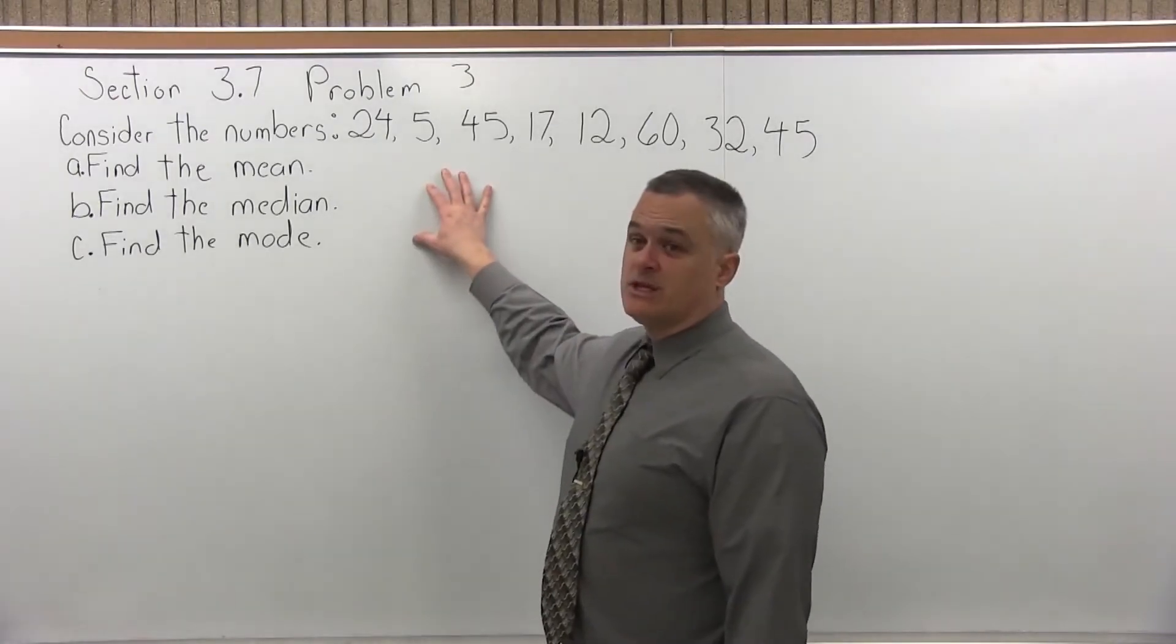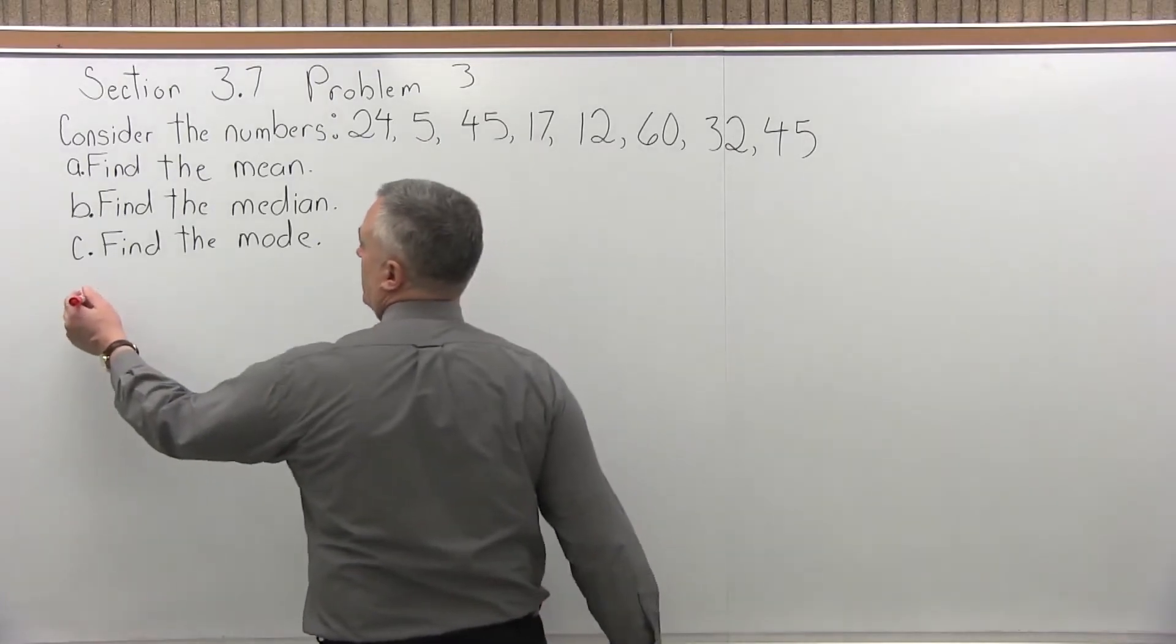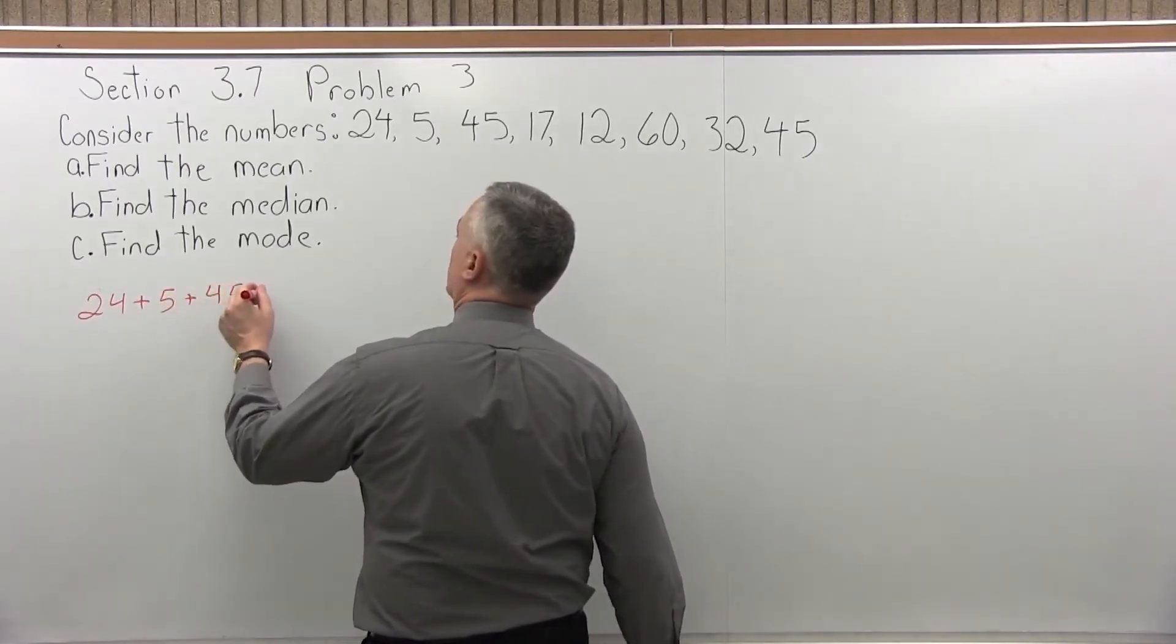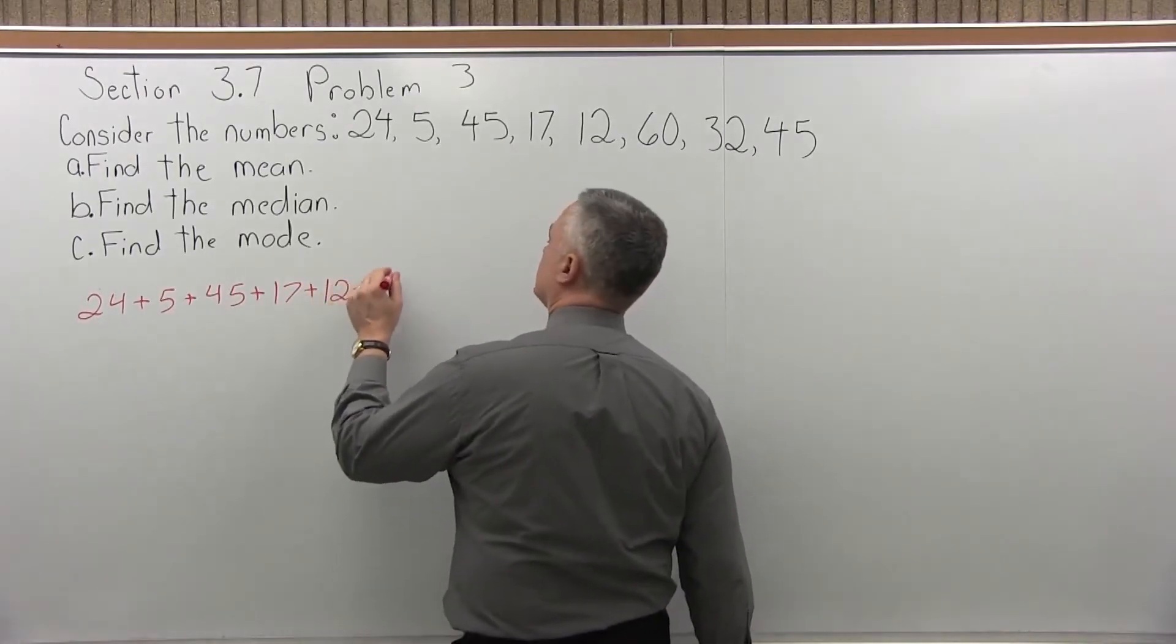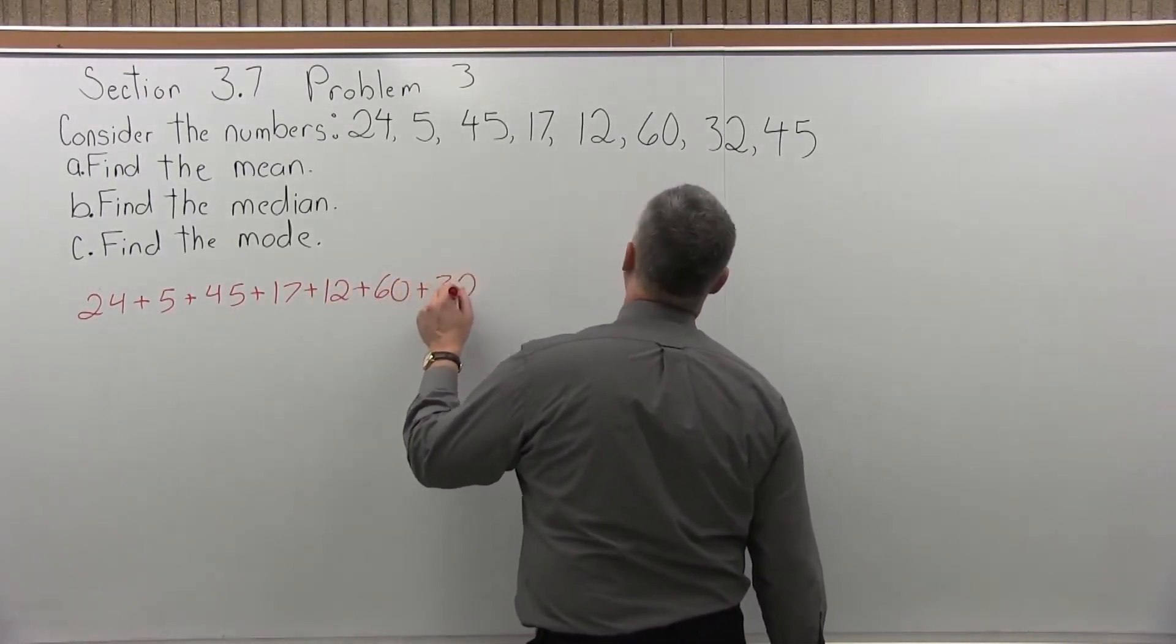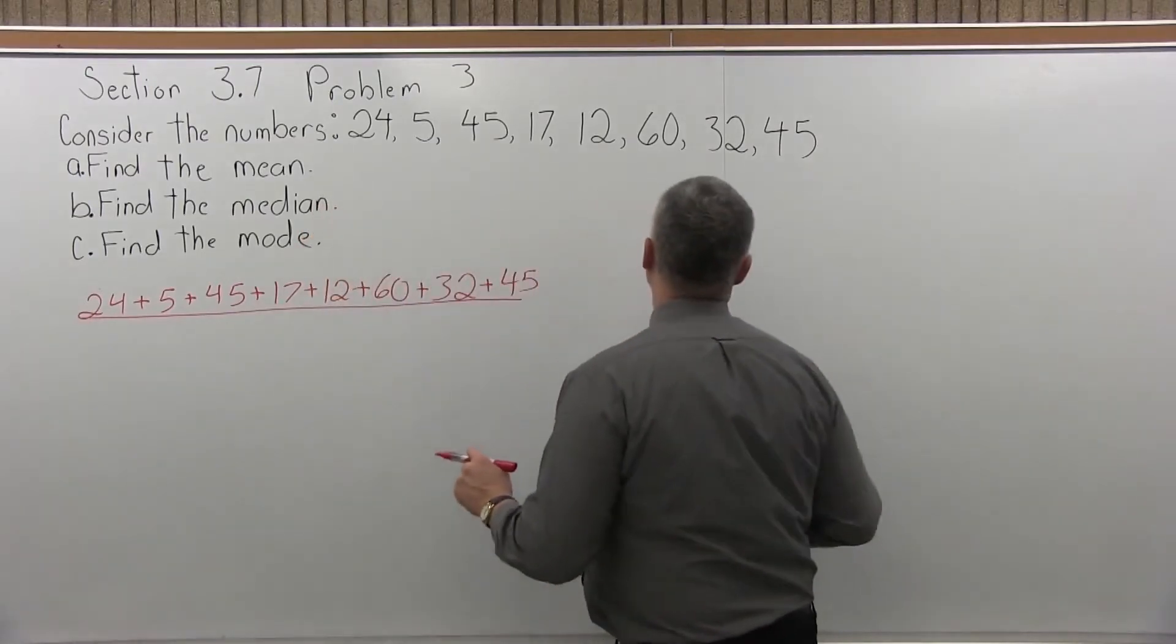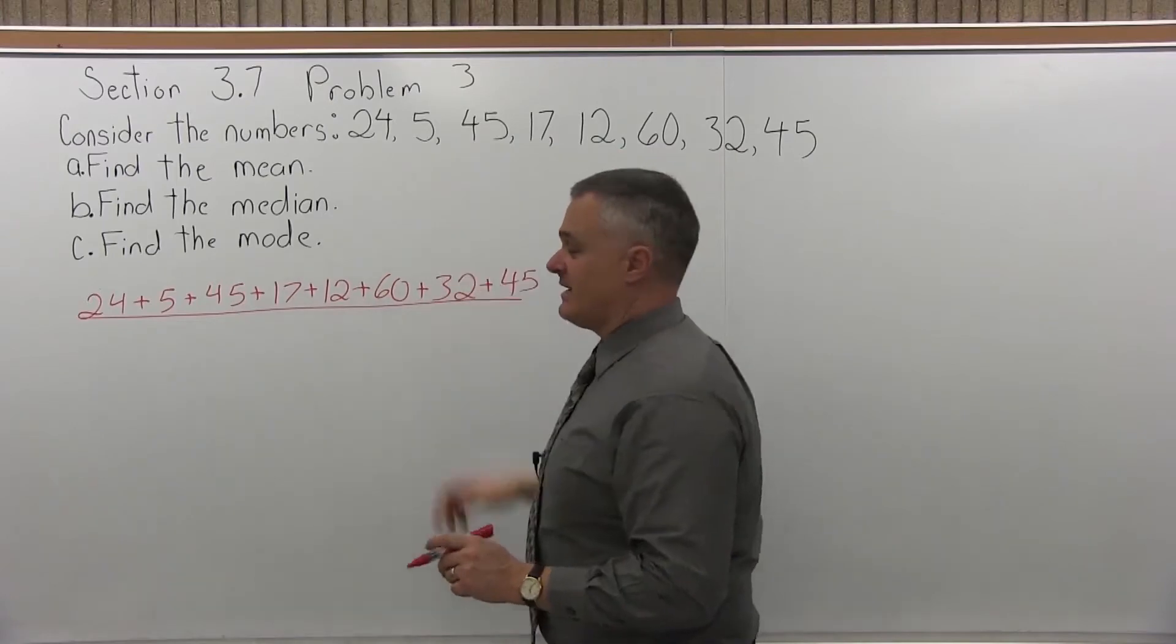So the mean, what we have to do is add those numbers together and divide by how many we have. So what that would amount to is 24 plus 5 plus 45 plus 17 plus 12 plus 60 plus 32 plus 45, and we would divide by 8 numbers.